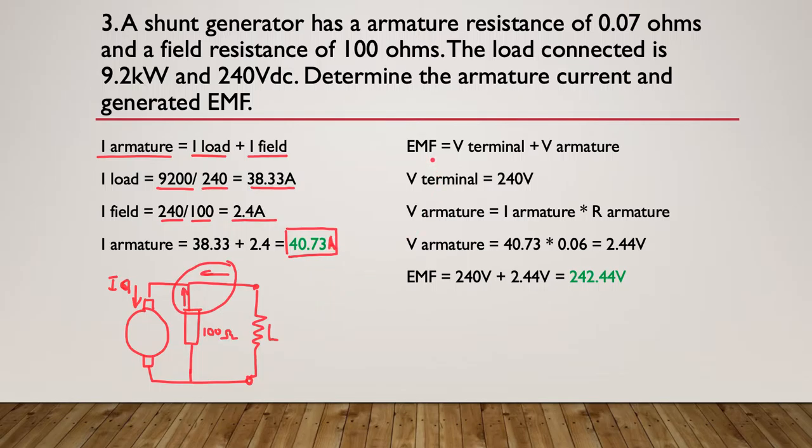So the voltage across the terminals, the EMF, has to be the voltage across the terminal plus the voltage across the armature. Well, the voltage across the terminals is easy because they tell us it's 240. The voltage across the armature, a little more difficult. We need the current through the armature, which we've already worked out. So we worked that one up out here before, and the resistance through the armature.